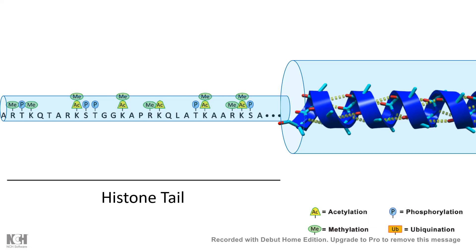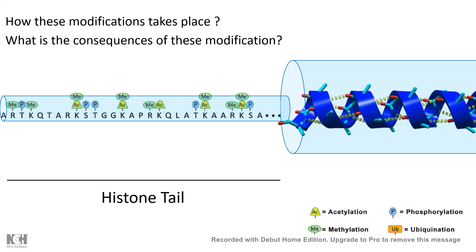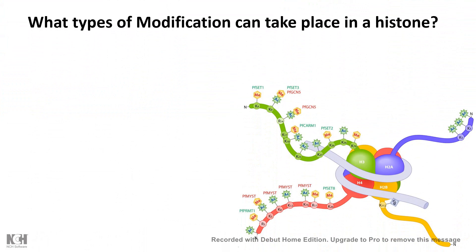We should first ask two questions: how do these modifications take place, what is the context behind that, and what is the consequence of these modifications? Before addressing those, we should understand what types of modifications are possible on a histone tail. Here I will only talk about a few of the modifications which are frequently occurring.